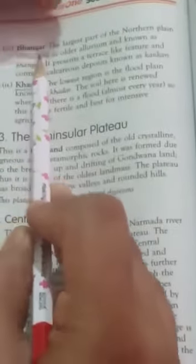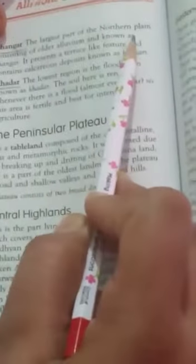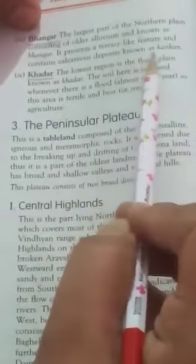The largest part of the Northern Plain consisting of older alluvium is known as Bhangar. It presents a terrace-like feature and contains calcareous deposits known as Kankar.